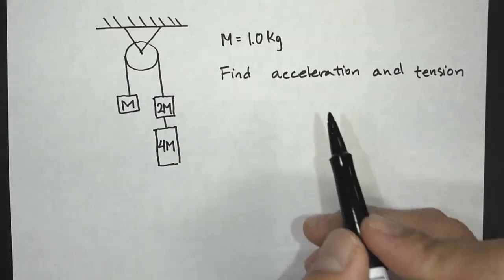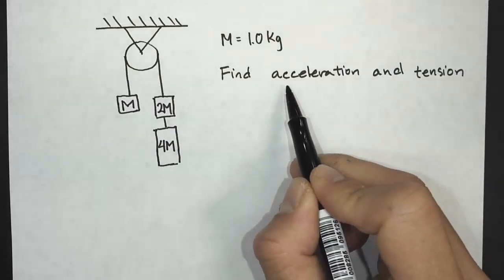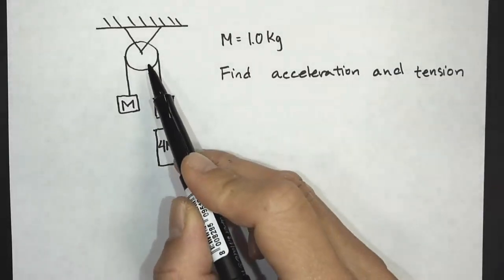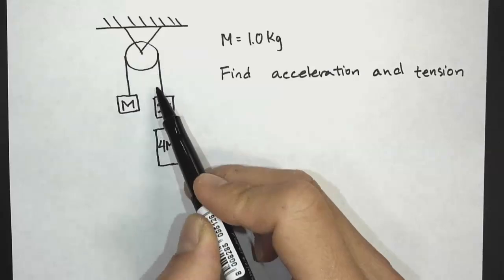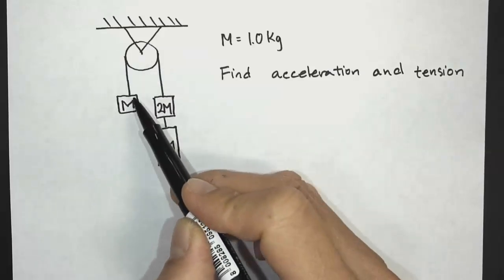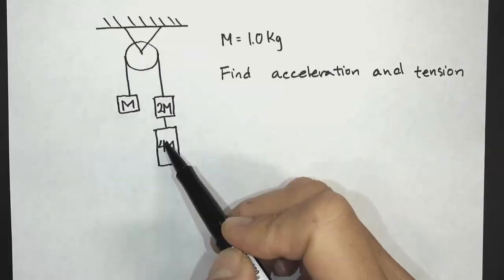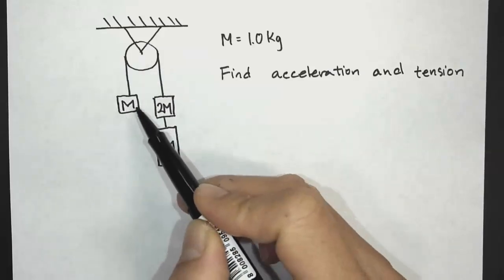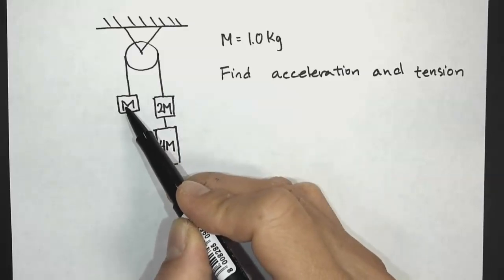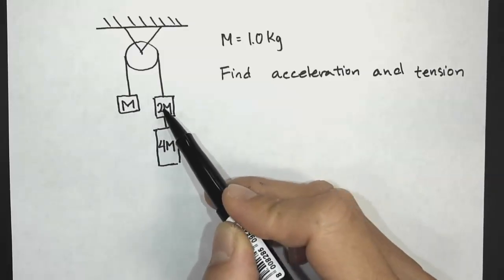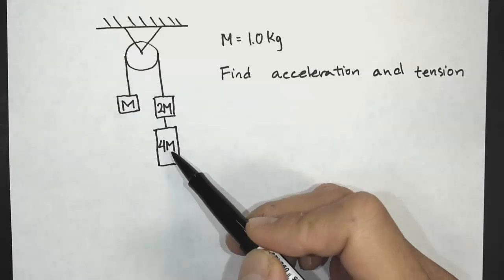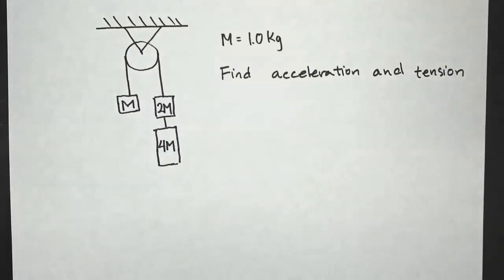In this video, we're going to find the acceleration and tension for this pulley tension problem. We have three masses connected to a string: M, 2M, and M on this side.